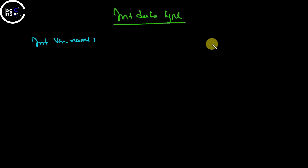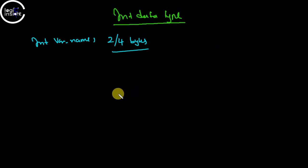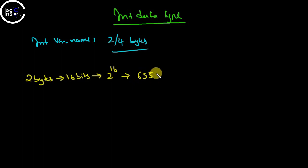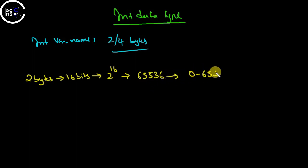Depending on the system or machine, either 2 or 4 bytes will be allocated. We will find the maximum and minimum ranges for both cases. By default, writing 'int' is nothing but 'signed int'. If the machine has 2 bytes, there are 16 bits, and since it's a base-2 system, 2 power 16 gives 65,536. Starting from 0, the range will be 0 to 65,535.